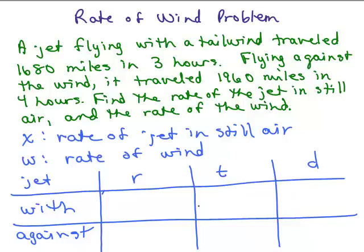We're going to make up a chart to fill in the information we know from this problem. Going with the wind, the jet is really getting the rate of the jet in still air plus the little extra wind. The tailwind means it's behind you — it's helping push you through the air — so this will be X plus W. Going against the wind means you're going into the wind and not going quite as fast, so that will be X minus W.